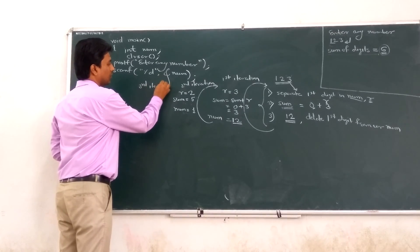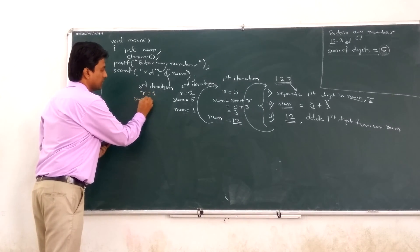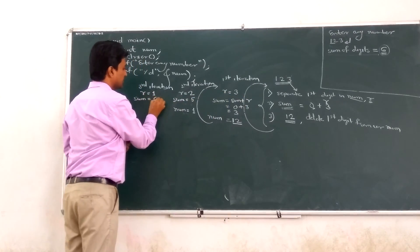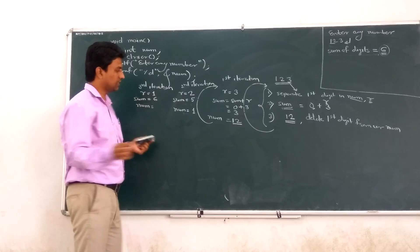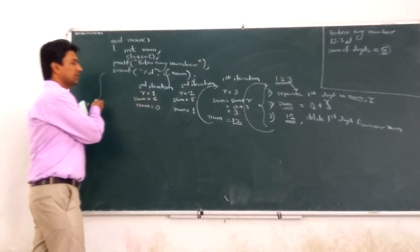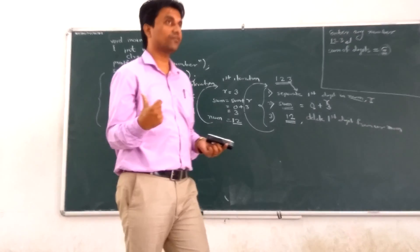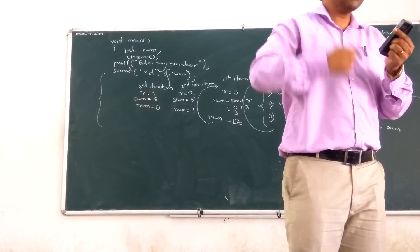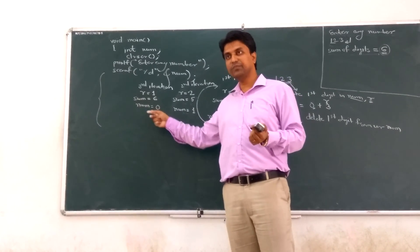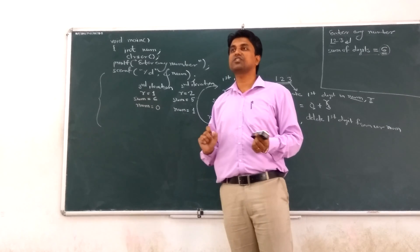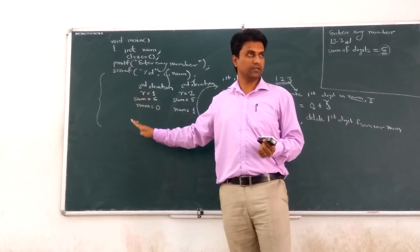Third iteration. What is the third iteration now? R is equal to 1. What is sum? Sum is equal to 5 plus 1, that is 6. Then num is equal to what? This is your original number now: 1. Discard the first iteration, that is nothing. So limit is 0. Then fourth iteration? No. So you got the condition for the while loop now. The condition: till num becomes 0. If num becomes 0, don't need an extra iteration. So we want to stop here at the third iteration.